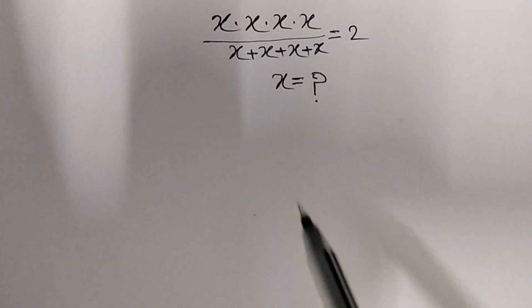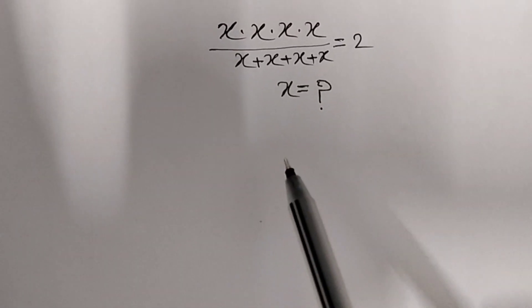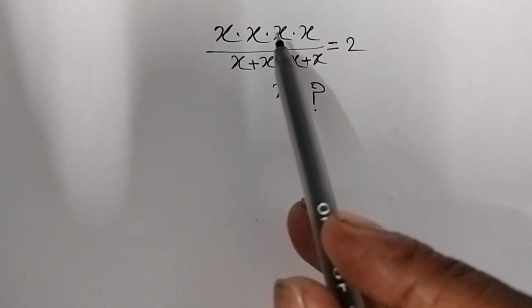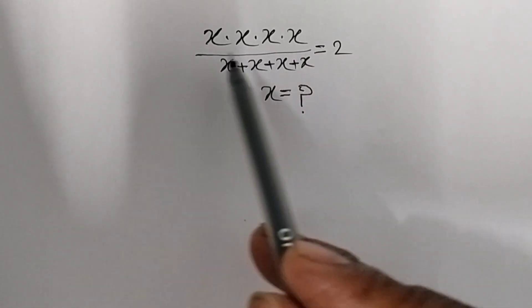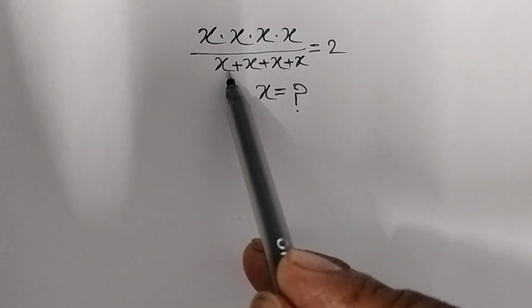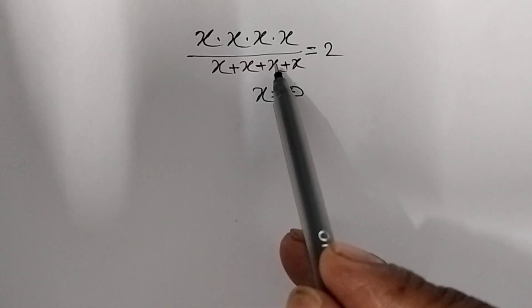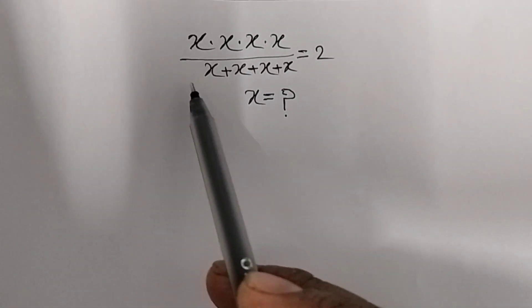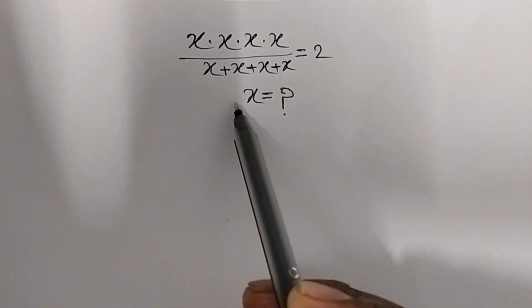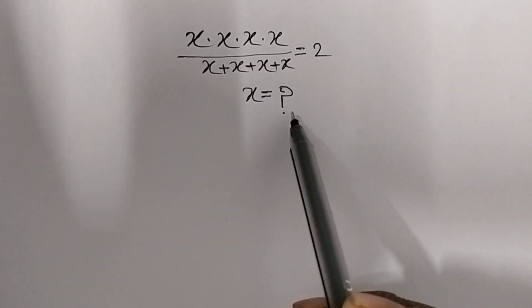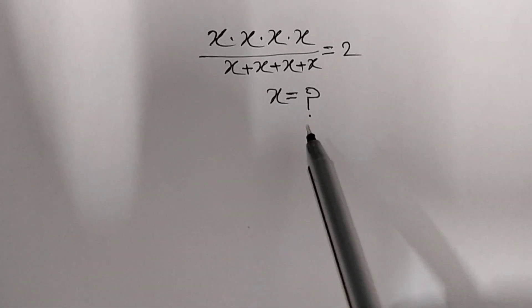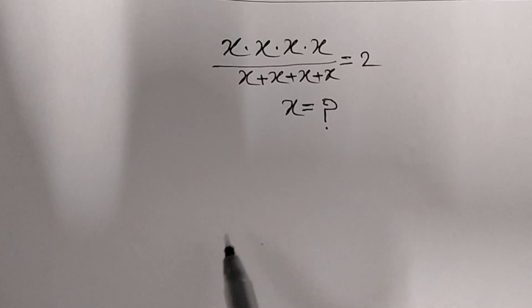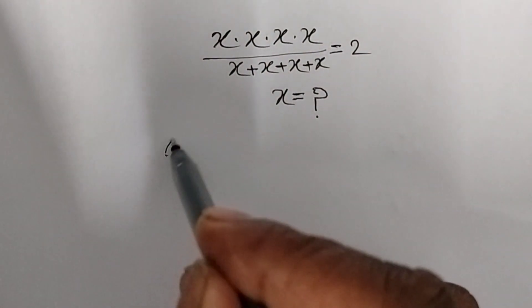Our given question is x times x times x times x upon x plus x plus x plus x equal to 2. This is our question. We will have to find the value of x. It's very easy. Let's see the solution.